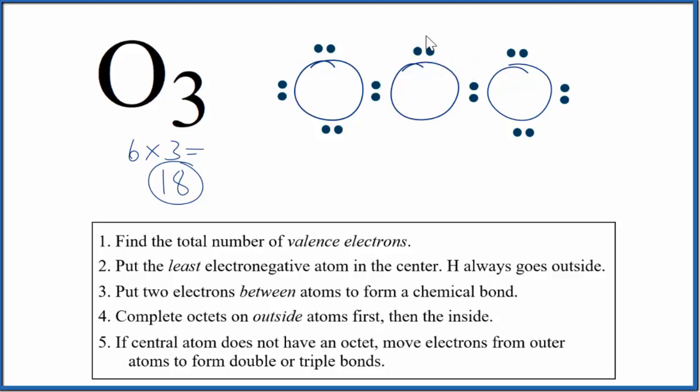The problem is the oxygen in the center only has six valence electrons—that's not an octet, and we've used all the valence electrons. What we can do is move two electrons from one of the oxygens and share them, creating a double bond. Now this oxygen still has 8, the oxygen in the center has 8, and we have 8 here. This is the Lewis structure for O3, ozone.